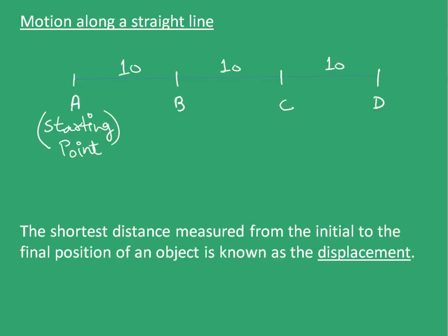Now we move forward to motion along a straight line. Suppose a participant starts from position A along a straight line. First, the participant goes from A to B, then goes from B to C, then goes from C to D, and finally comes from D to B.